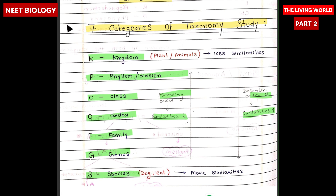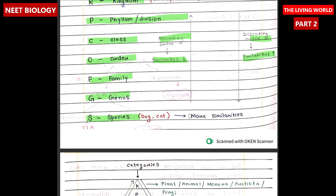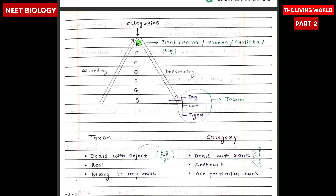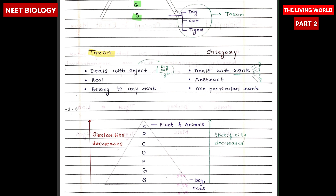For example, in species, more similarities are found. A pyramid is made to explain the whole ranks. Now let's see the difference between taxon and category. Taxon deals with an object — a taxon refers to a specific group of organisms at a particular level of a taxonomic hierarchy, like species, genus, and family.